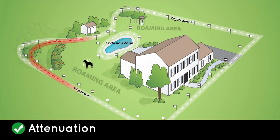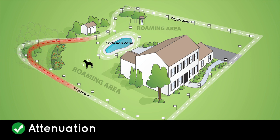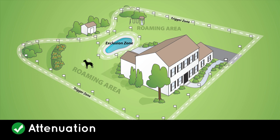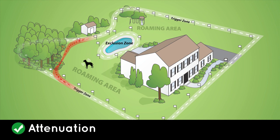Attenuation is a bow, dip, or criss-cross in the fence boundary. This can be caused by objects that interfere with the signal strength of your wireless fence. The resulting shape of the fence boundary may be slightly different than initially recorded, and the roaming area may be reduced.